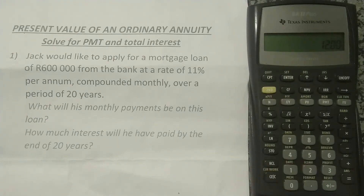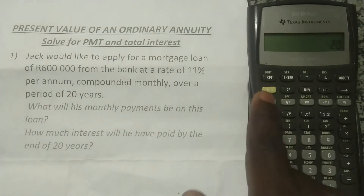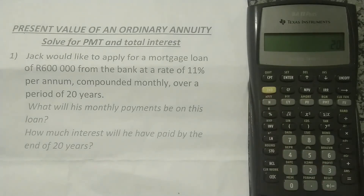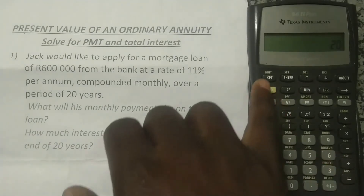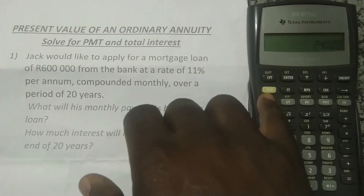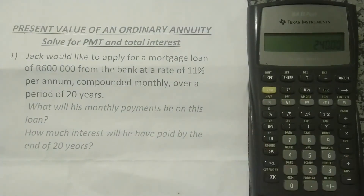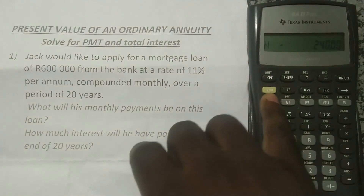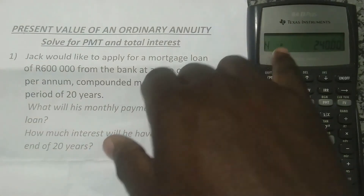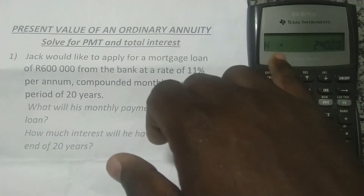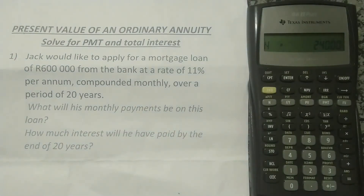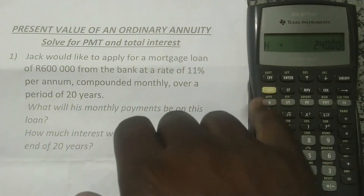Now we can do the calculations. The loan is for 20 years compounded monthly, so we type 20, press Second Function, then N. This multiplies the number of years by the compoundings per year — 12 — giving us 240 periods. Press N again to confirm. N equals 240.